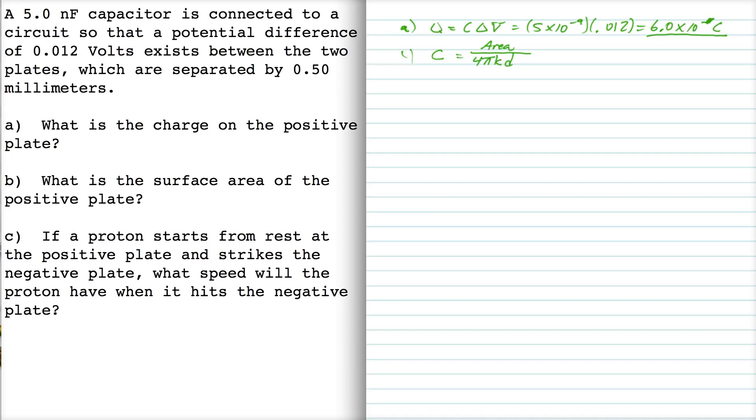Where k is the Coulomb constant and D is the separation between the plates, and we know the separation between the plates and the capacitance, so I'm going to rewrite this as the area is just equal to 4 pi kd times the C.